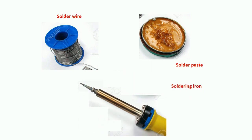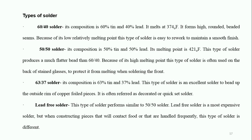Types of solder are categorized depending on the tin and lead proportion. It is easy to understand: 60/40, 50/50, 60/37 — the first number indicates the tin percentage and the remaining is lead percentage. Depending on the application and temperature, you can choose accordingly. If you use lead it can damage the environment, so we prefer lead-free solder, but practically most applications still use 50/50 solder.